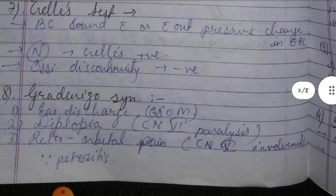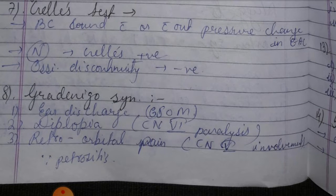Seventh is Gelle's test — bone conduction sound with or without pressure change in the external auditory canal. In a normal ear, Gelle's is positive. In ossicular discontinuity, Gelle's is negative.